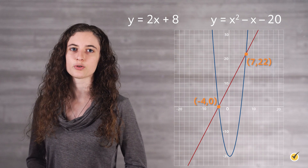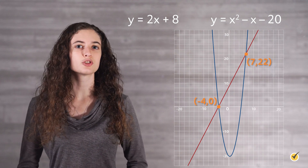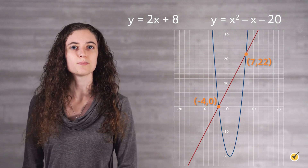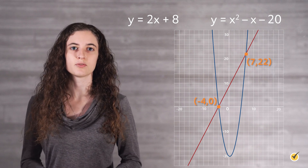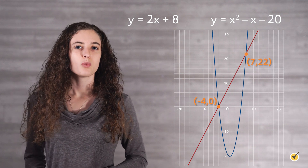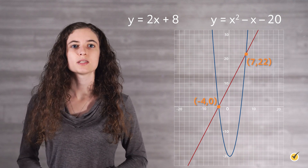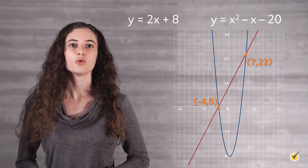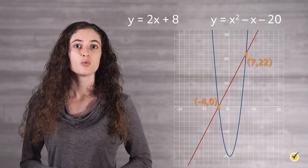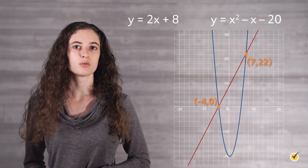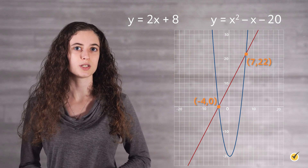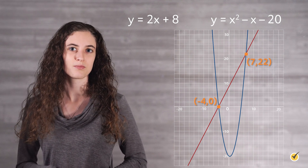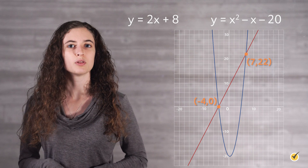But what if we aren't able to graph our equations? Well, that's where algebra comes in. The other way to solve systems like this is very similar to the substitution method of solving regular systems of linear equations. To find at what points our equations are equal to each other, we can substitute our y values for each other. Looking back at our equations from earlier, we can see that since y equals 2x plus 8, we can replace the y in y equals x squared minus x minus 20 with 2x plus 8 — or in other words, set our equations equal to one another. When we write it out, that will look like this.